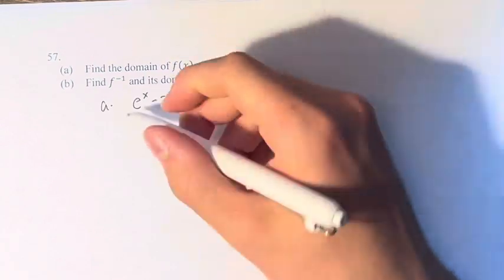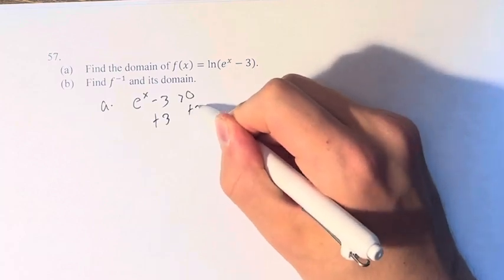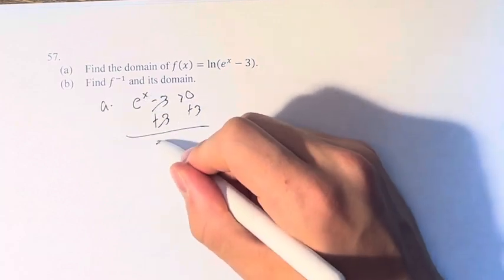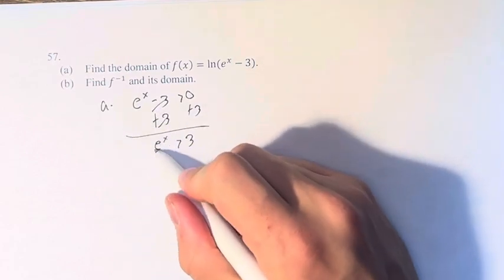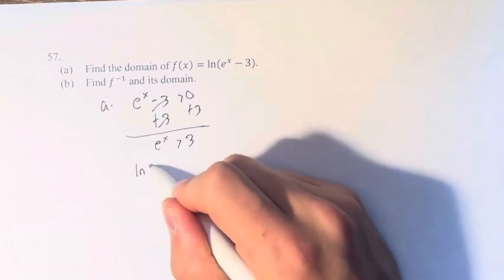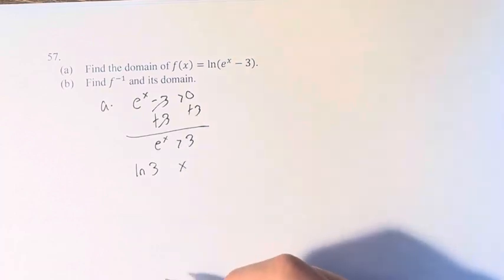The domain, therefore, is just solving for this. Adding 3 to both sides, if e^x is greater than 3, turning this into a logarithm, log base e, which is just ln, of 3, it is equal to x.